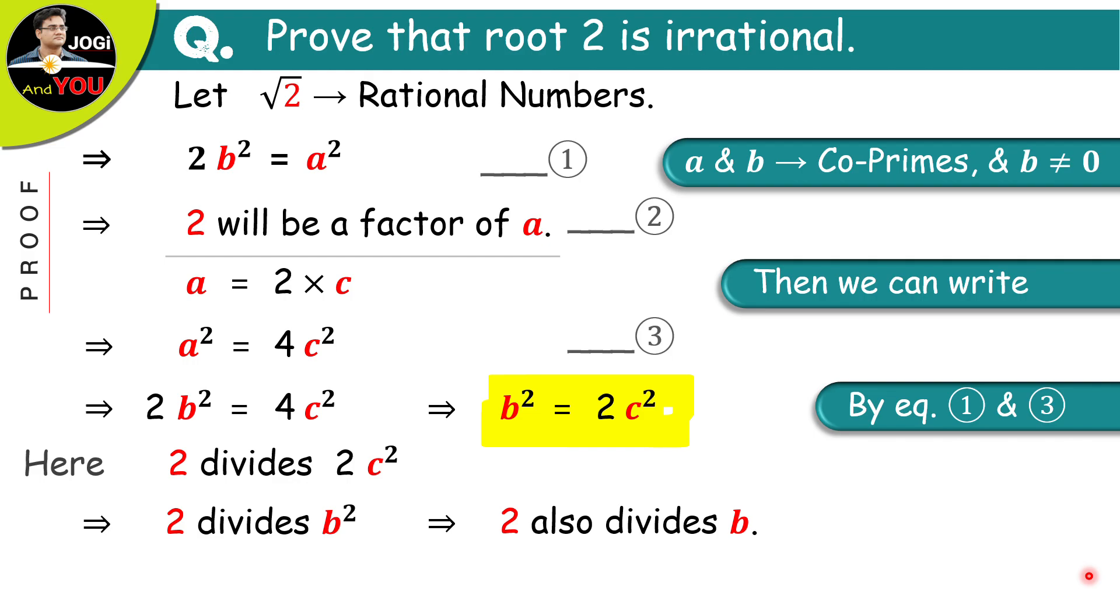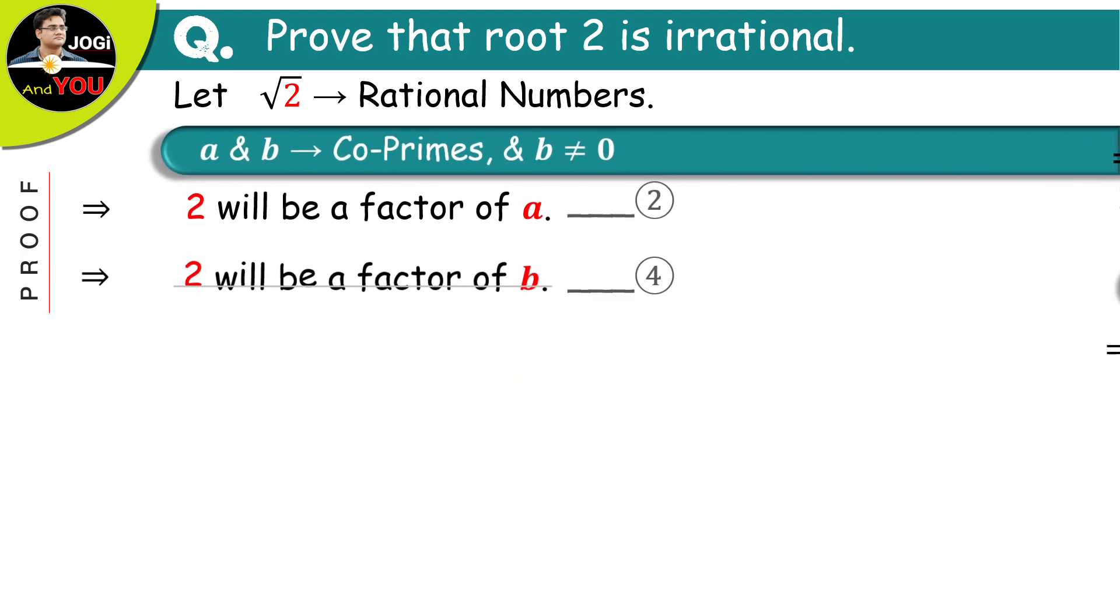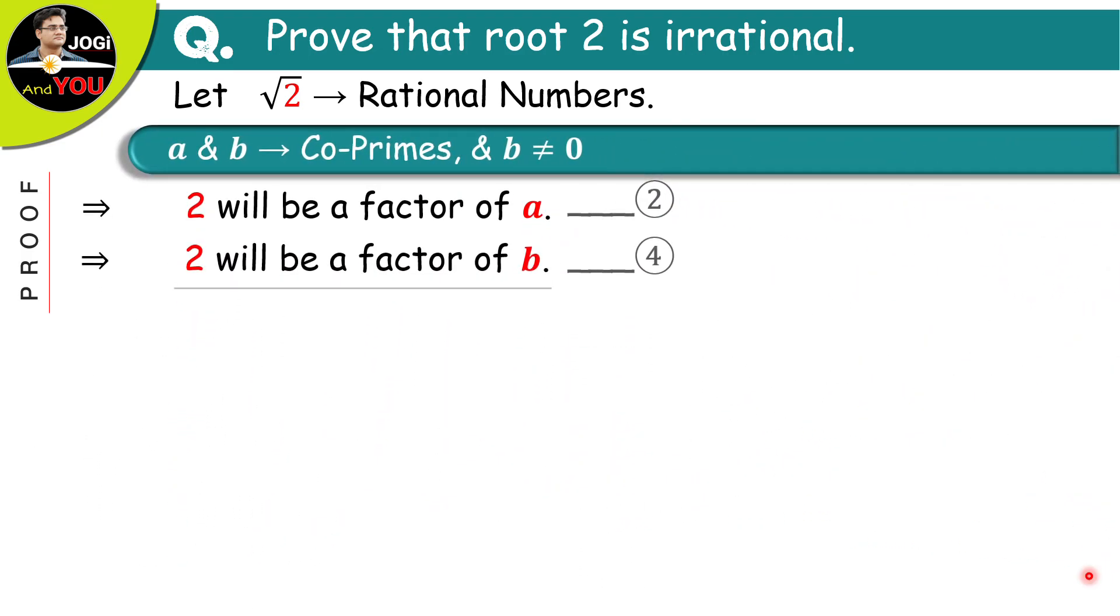Now, we have the same result again. So, we can say that 2 will be a factor of b and this will be our equation number 4. So, just wipe out all the extra things and keep the things we need later.